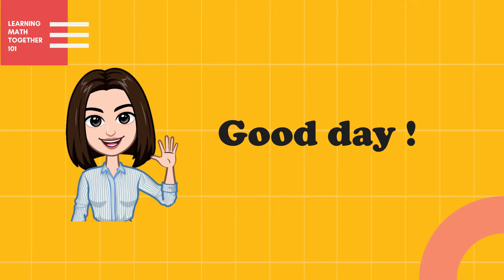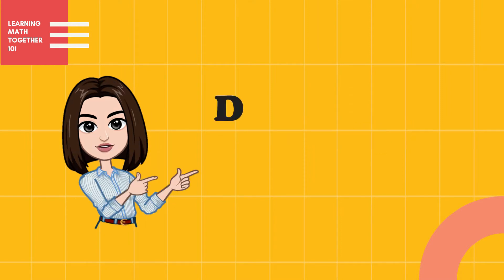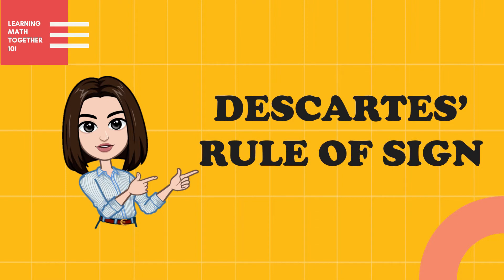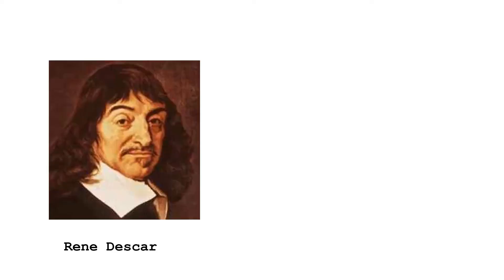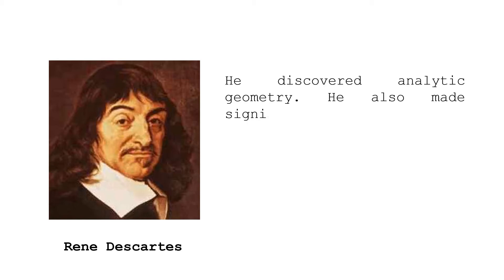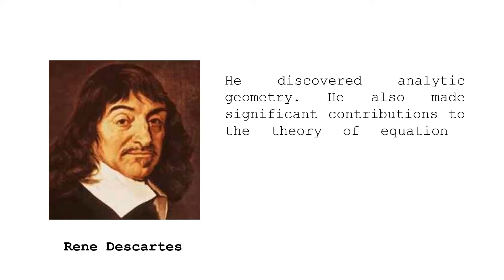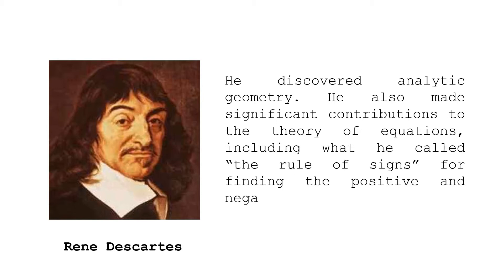Good day everyone. In this video we will be discussing Descartes' Rule of Signs. You will learn how helpful Descartes' Rule of Signs is in finding the zeros of a polynomial function. The man behind this rule is none other than René Descartes, a French philosopher, scientist, and mathematician who discovered analytic geometry and made significant contributions to the theory of equations, including the rule of signs.